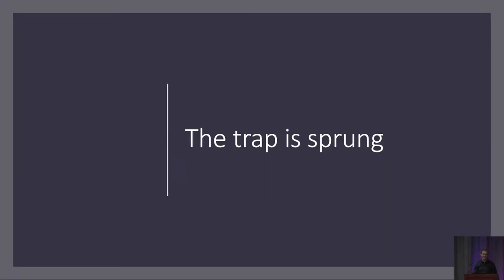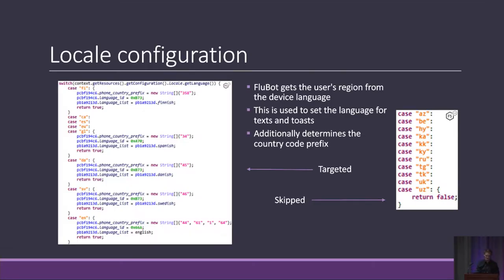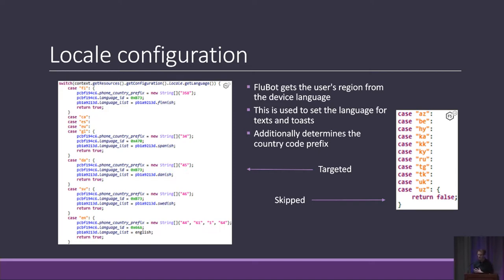You've clicked the link, obeyed the command, and it's all downhill from here. You've downloaded the app, and the first thing it does is work out where you are, so it can tailor your experience — making sure it's using the right language and setting your country code, so that when your phone sends out text messages, they go to people in your country. On the left we can see some of the code with country codes: Finland, some Spanish ones, Denmark, Sweden, England. But on the right, you can see some which are skipped — most of them are from the Soviet Union. No prizes for guessing where this malware came from.